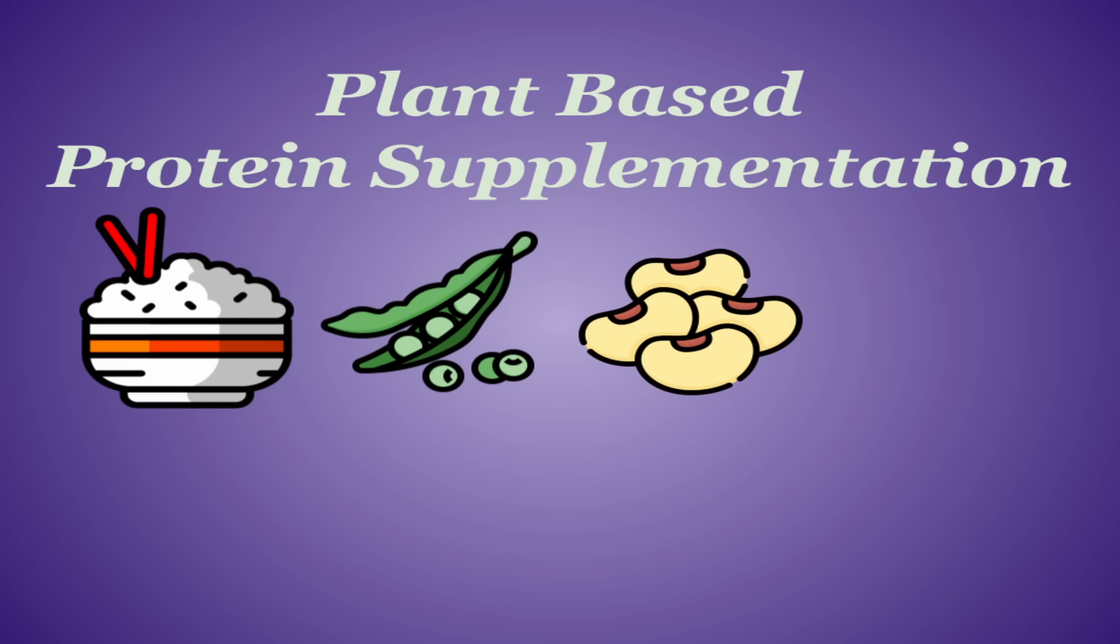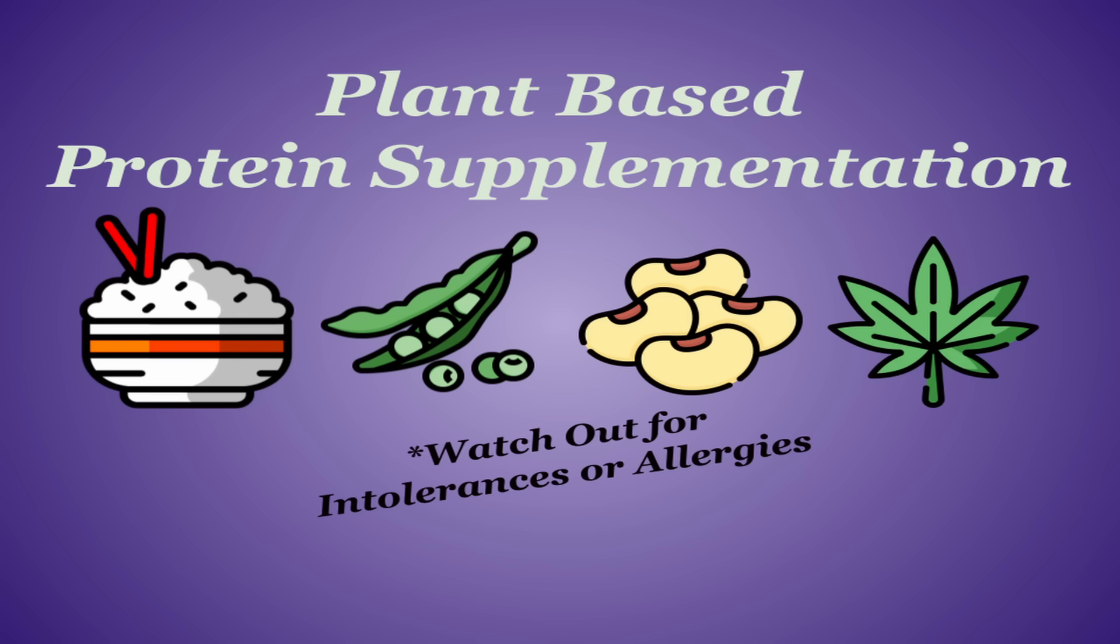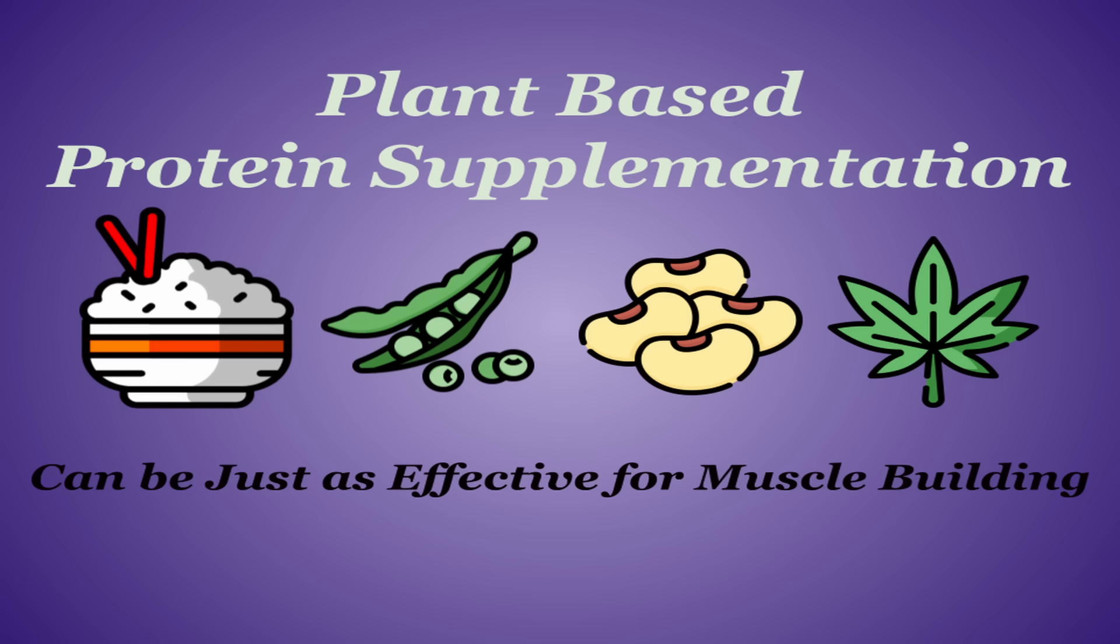Plant-based protein supplementation most commonly comes from rice, pea, soy, or hemp, or often a combination of these. You do need to watch out for gluten intolerance or allergies to soy or any other potential ingredients. Many studies have shown plant-based protein supplements can be just as effective for muscle building as long as its protein and BCAA contents are the same.